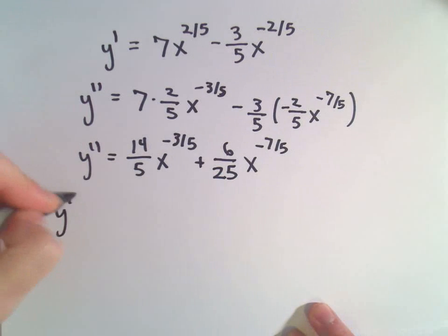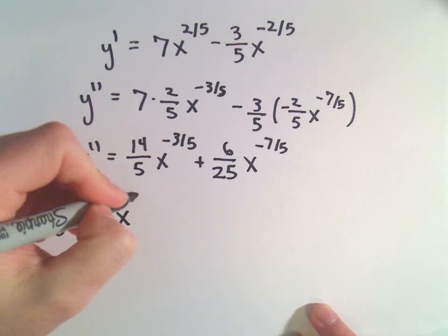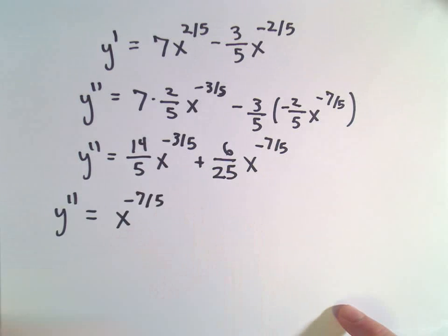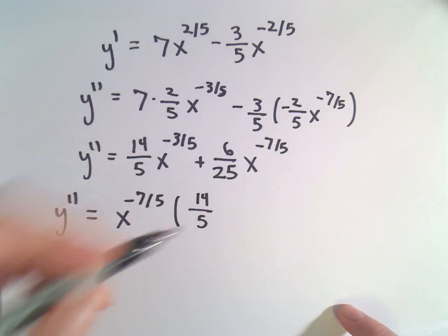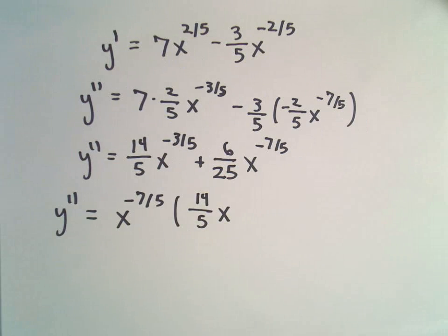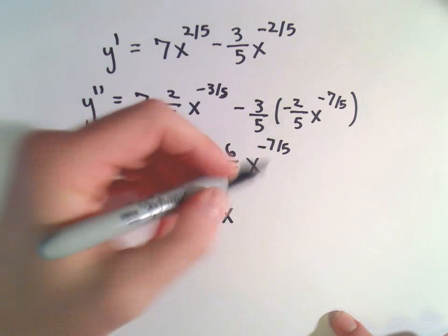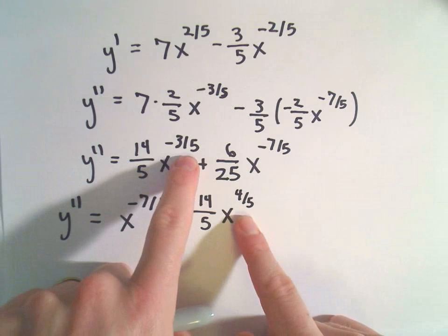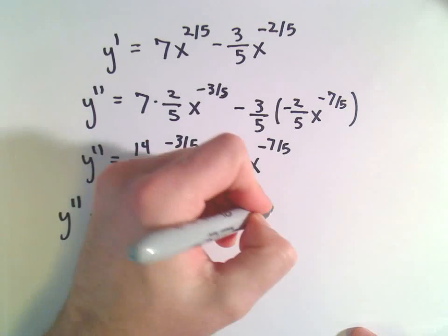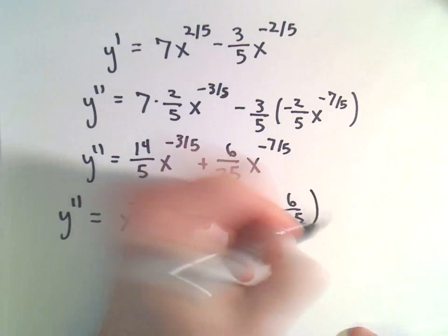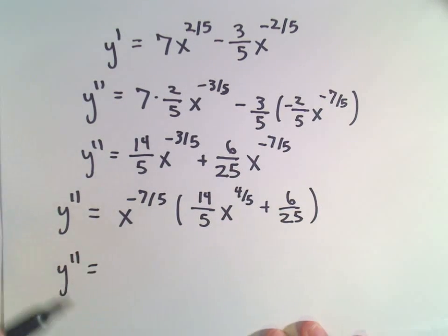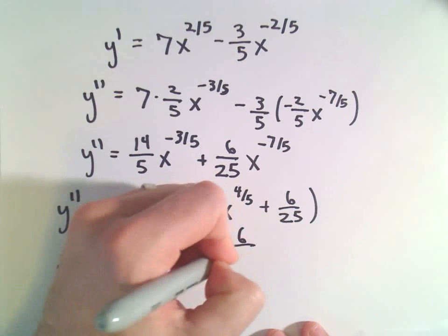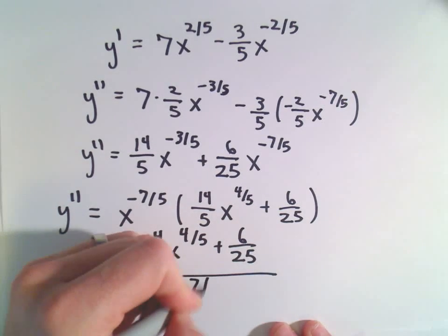I'll factor out x to the negative 7/5, the smaller exponent. For the 14/5 term, I need x to the 4/5 since negative 7/5 plus 4/5 equals negative 3/5. So we get 14/5 x to the 4/5 plus 6/25, all over x to the 7/5.